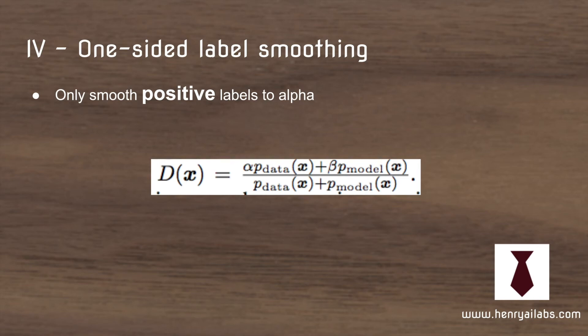Finally, the last idea is virtual batch normalization. When you have batch normalization, you compute these gains and biases, the gamma and beta parameters, based on the batch of generated images. They don't want to have this kind of inner batch dependency; they want it to be totally independent. What they do is keep a reference batch and use this to compute the gains and bias parameters of batch normalization for all the generated images.